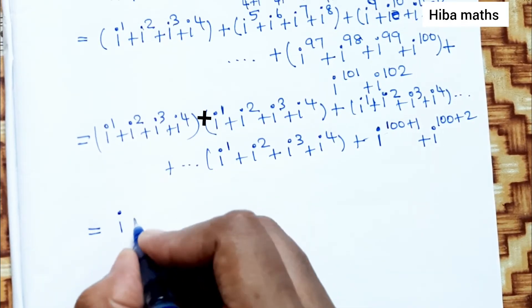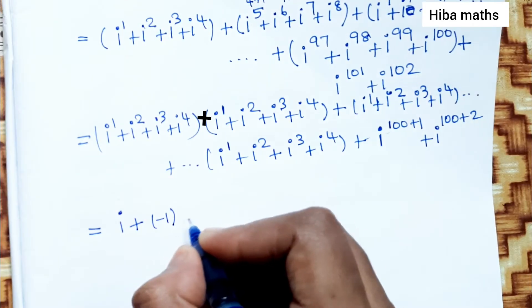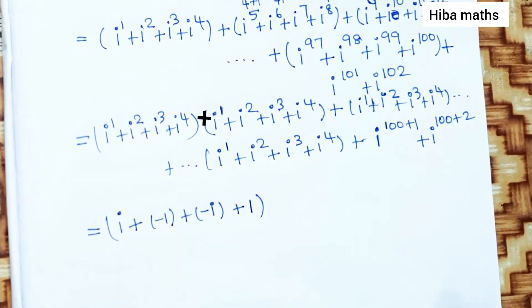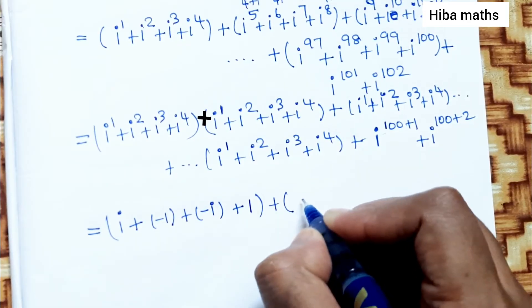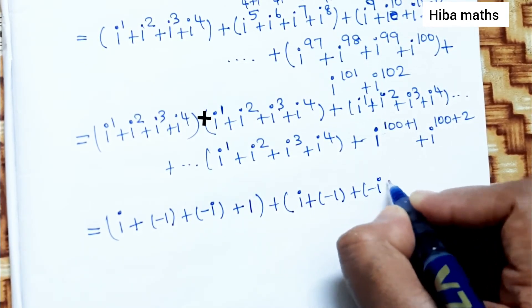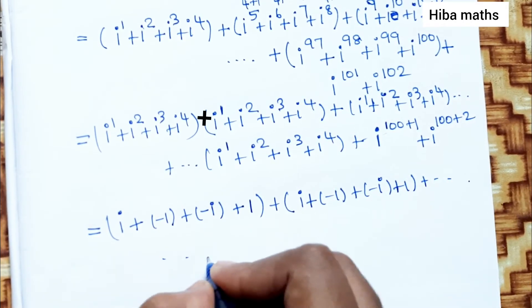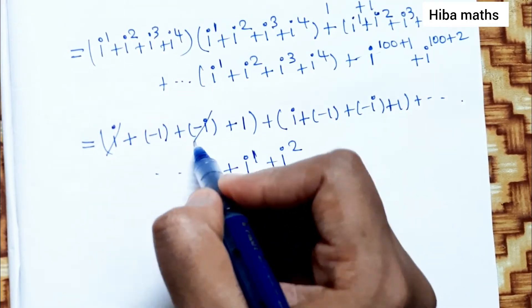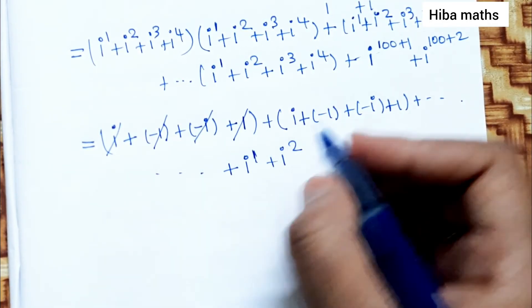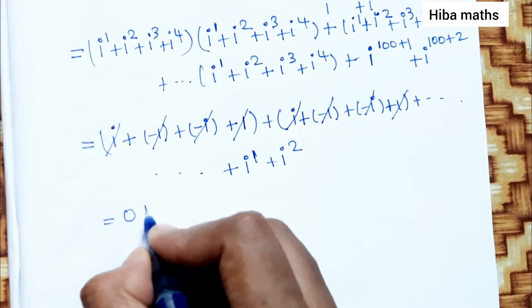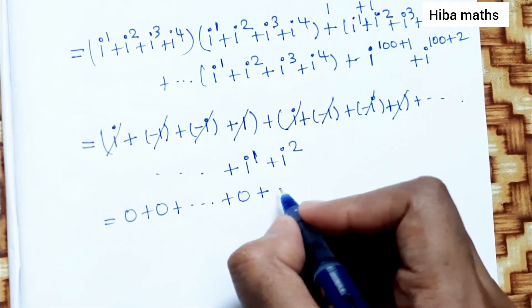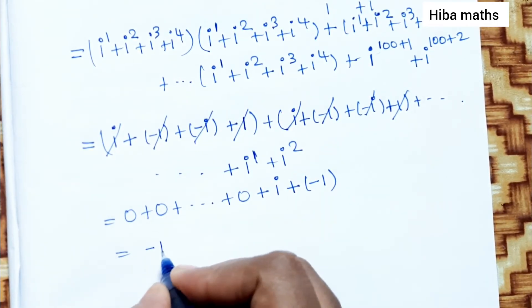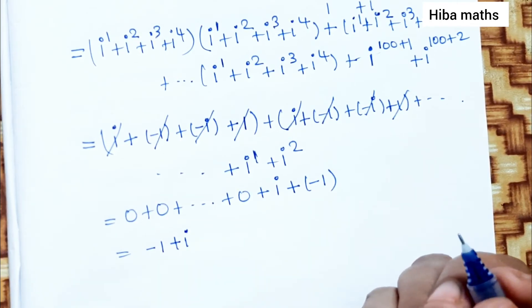i value is substitute. i power 1, i square minus 1, i power 3 minus i, i power 4 equals 1. And same, i will repeat: i plus minus 1 plus minus i plus 1. So 25 times 0 plus i power 1 i, i square minus 1.